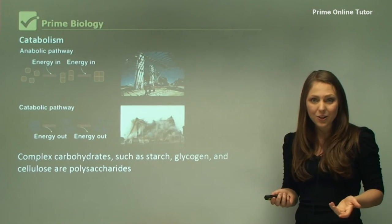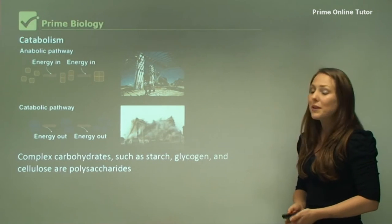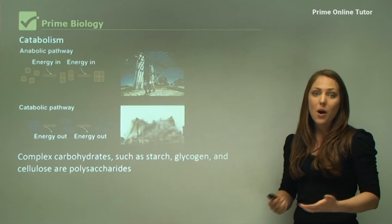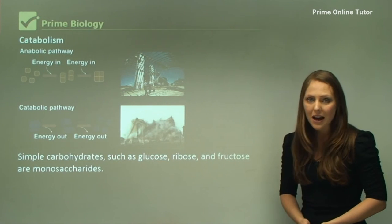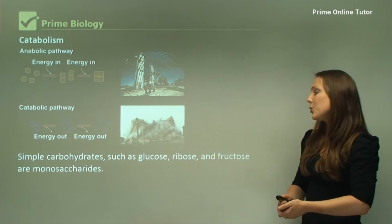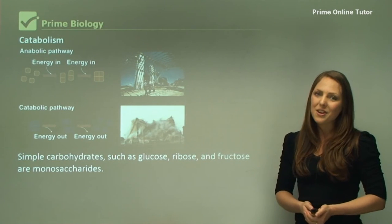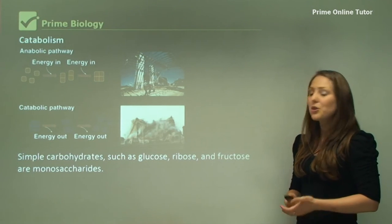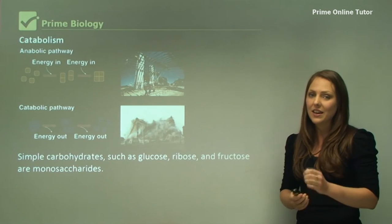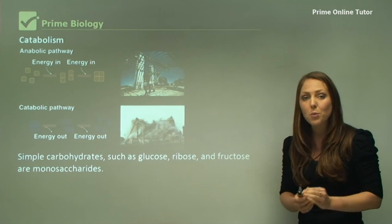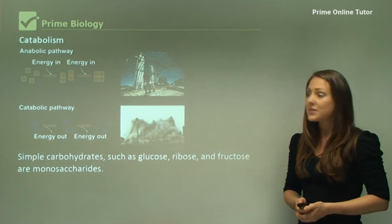Starch you can get from potatoes and cellulose you can get from plants — so we eat this quite often if you're eating salads and vegetables. Simple carbs include glucose, ribose, and fructose, and they're all monosaccharides. Glucose you can get from simple lollies — that's the simple form of sugar — and fructose actually comes from fruits.